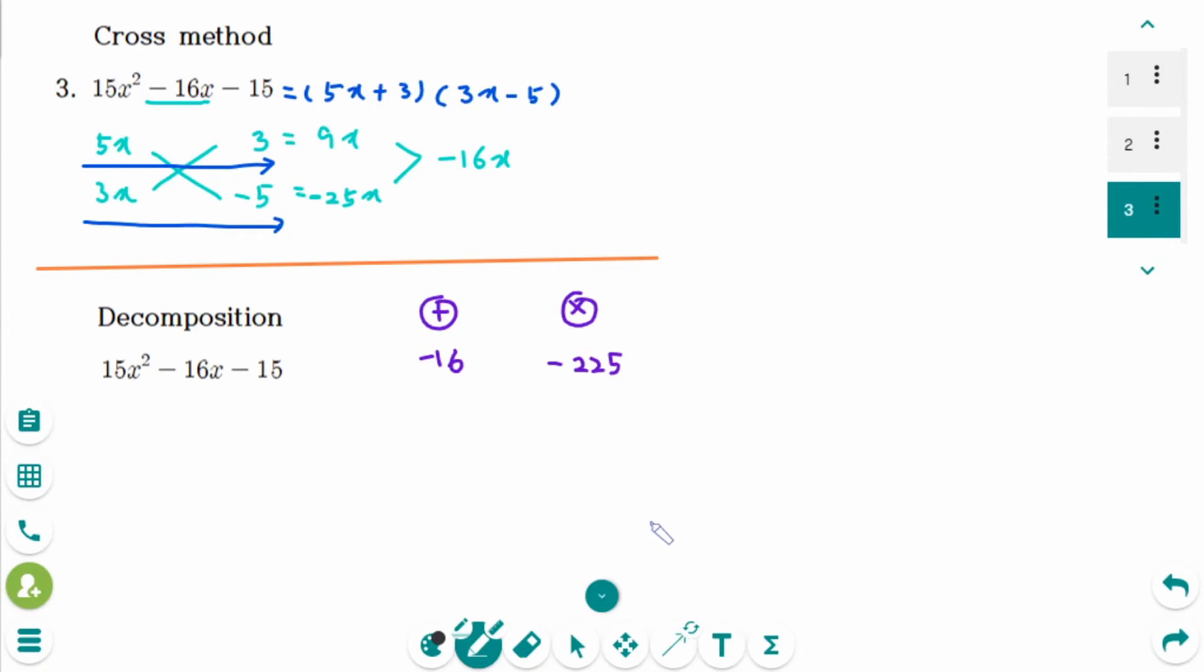You might have thought that using decomposition was better for the first two problems. But the cross method might be easier if the number is this big.